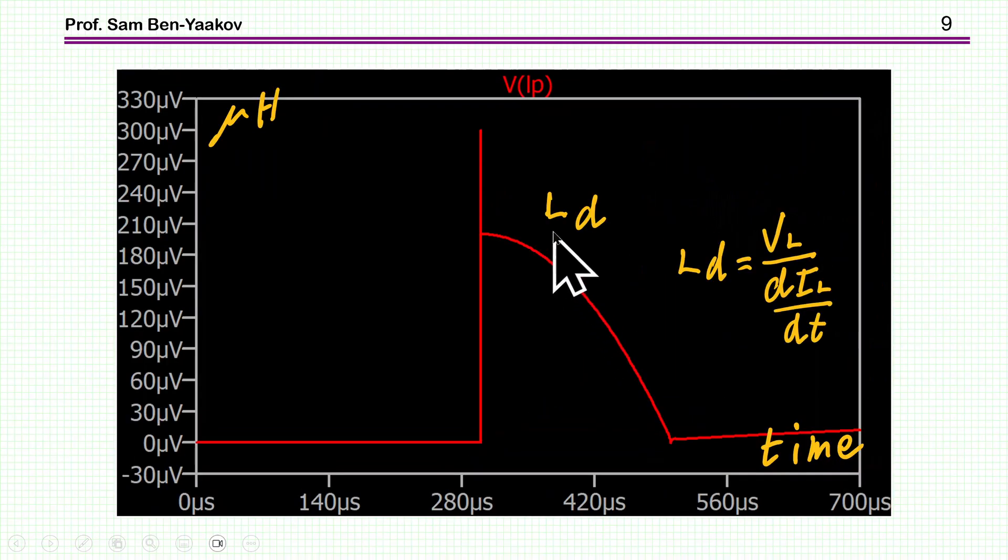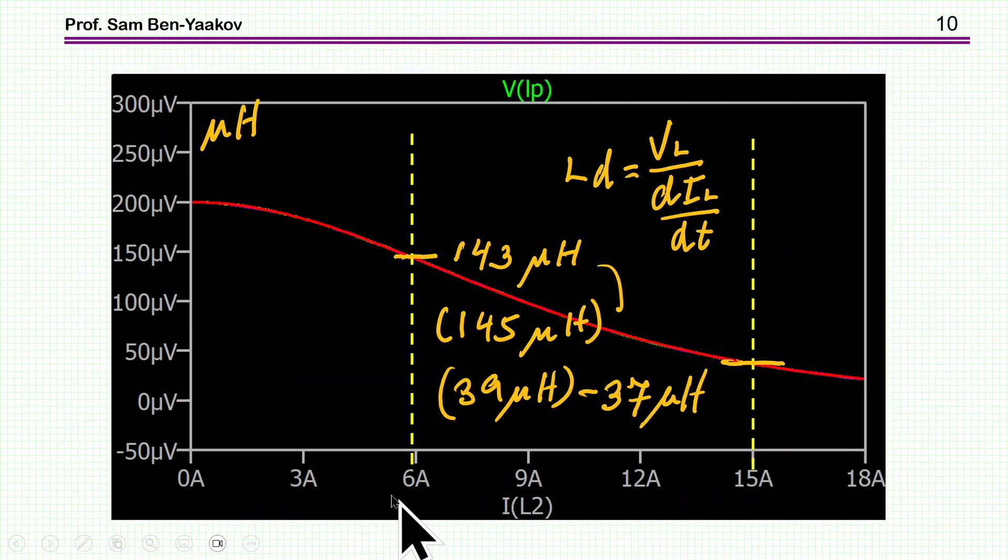Calculating the inductance as the voltage divided by the derivative of the current, which is done online while it's running, this is now as a function of time, but this is of less importance. More interesting is if we plot it as a function of the current, and here we have again the differential inductance, 200 microhenry to begin with.